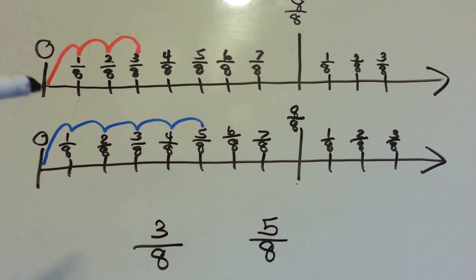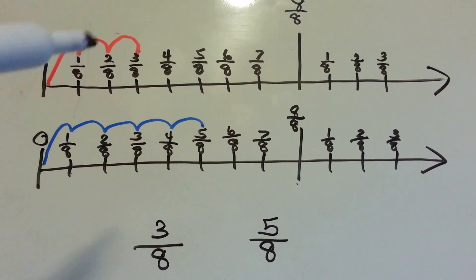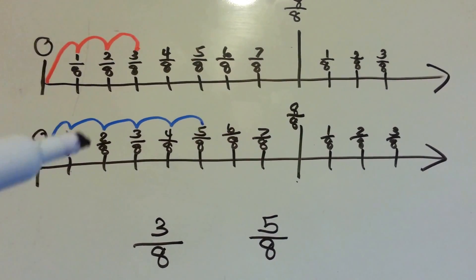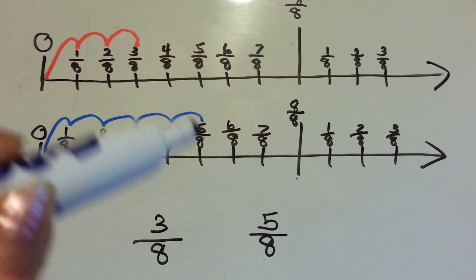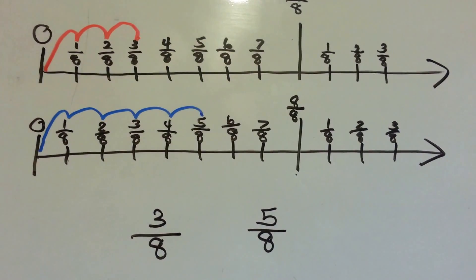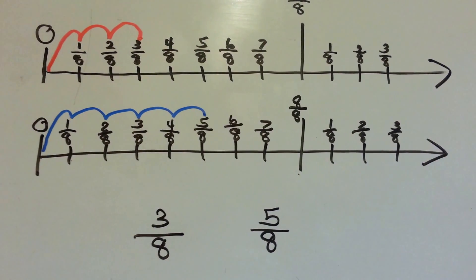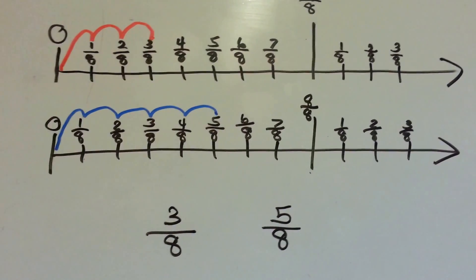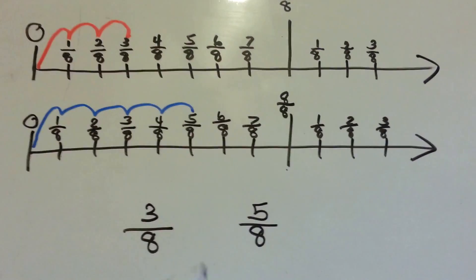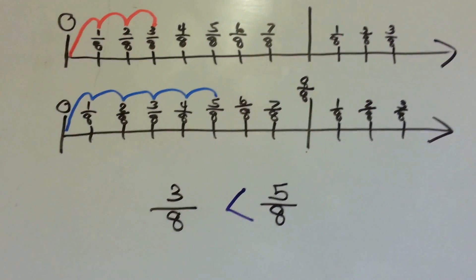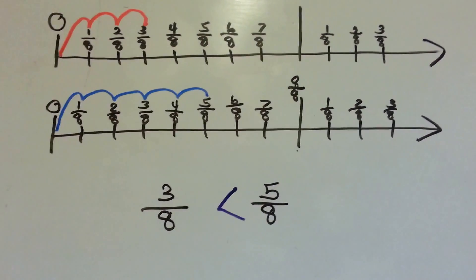Here's three-eighths, and here's five-eighths. Which one went farther? Which one's bigger — the blue one or the red one? The three-eighths or the five-eighths? The five-eighths is bigger. Big mouth eats big number.